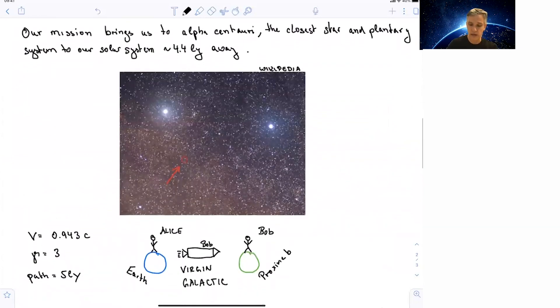Our mission is to bring us to Alpha Centauri. Alpha Centauri is the closest star and planetary system to our solar system. It's actually not just one star, but multiple stars. And our journey brings us to Proxima b, which is a planet in the Alpha Centauri system.